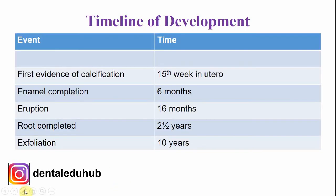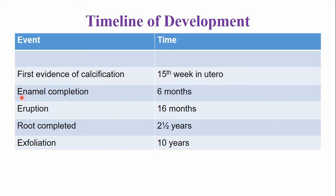What is the timeline of development of the deciduous maxillary first molar? The first evidence of calcification begins when the baby is 15 weeks in utero. The enamel is completed by the age of 6 months. The tooth emerges into the oral cavity by the age of 16 months. The root is completed by the age of 2 and a half years. Around the age of 10 years, this tooth is exfoliated and replaced by the maxillary first premolar.